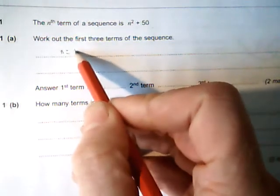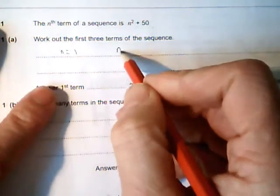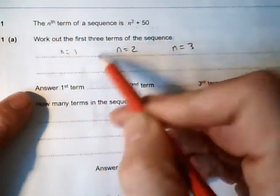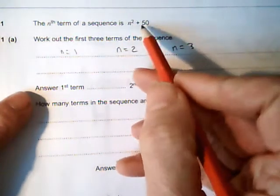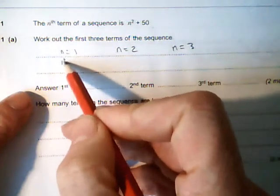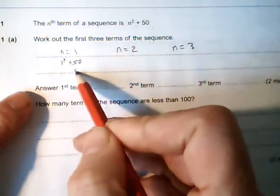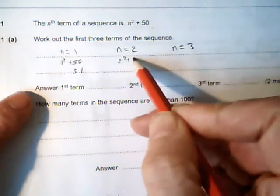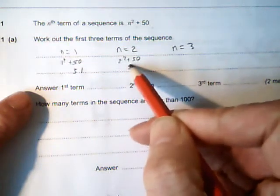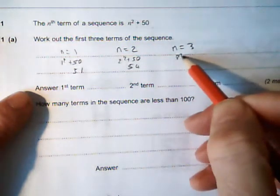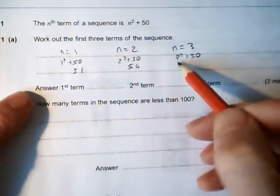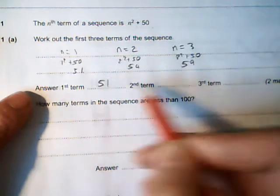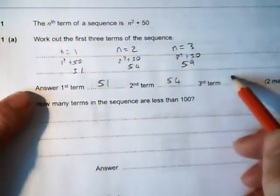The first three terms are when n is 1, the second one is n is 2, and the third one is n is 3. So we've got these numbers in, and we'll do 1 squared plus 50, n squared plus 50 is 51, 2 squared plus 50 is 54, and 3 squared plus 50 is 59. So the terms are 51, 54, 59.